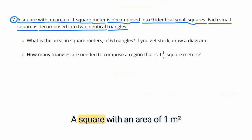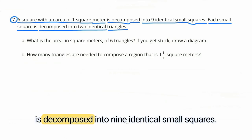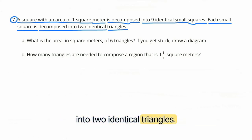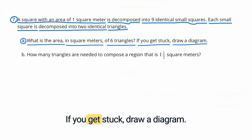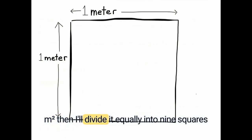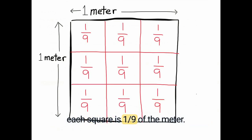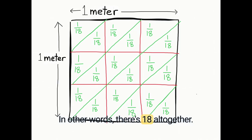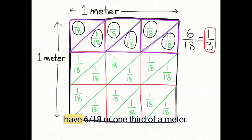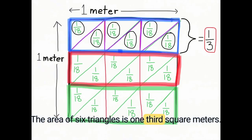Problem 7: A square with an area of 1 square meter is decomposed into 9 identical small squares. Each small square is decomposed into 2 identical triangles. A: What is the area in square meters of 6 triangles? I'll draw a diagram starting with 1 square meter, divide it into 9 squares — each is one-ninth of a square meter. Cutting each square in half makes each triangle one-eighteenth of a square meter, so there are 18 triangles total. 6 out of 18 gives 6-eighteenths, or one-third. The area of 6 triangles is one-third square meters.